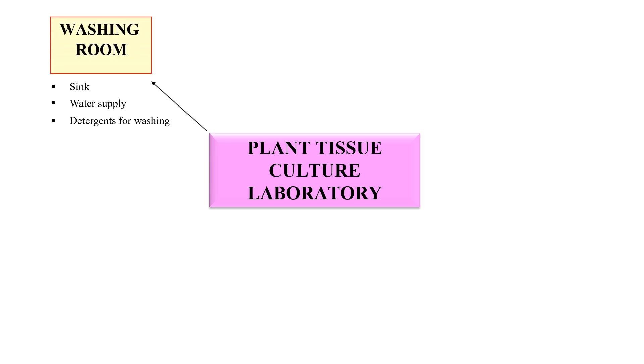First of all, how you can design a typical Plant Tissue Culture Laboratory. For this, you should have a separate area for each separate task. You must have first the washing room, because you will start any experiment after washing — you have to wash the apparatus and the glassware. In the washing room you should have a sink, water supply, and the chemicals for washing.